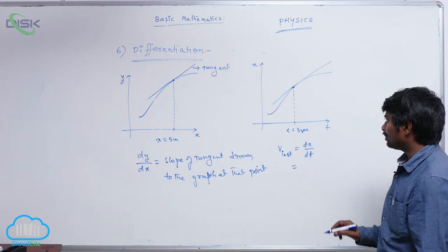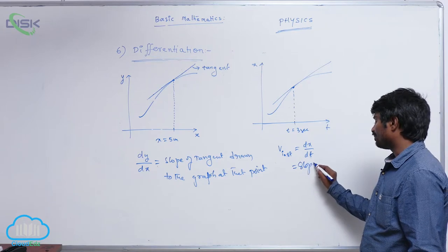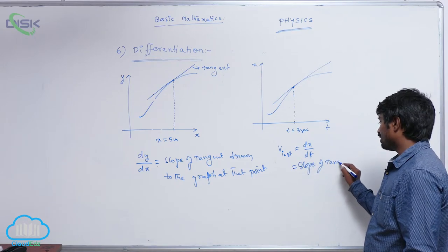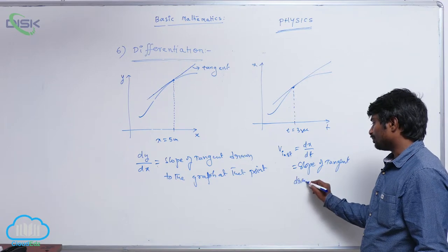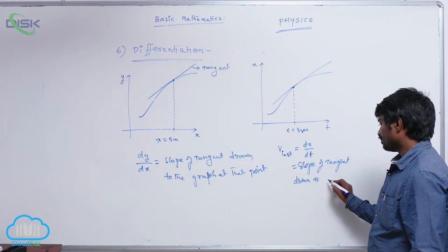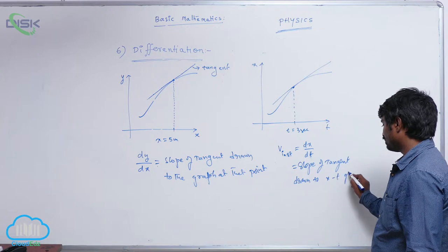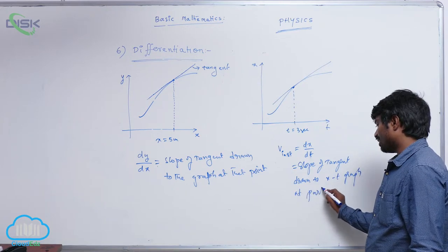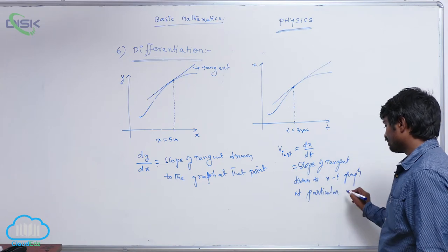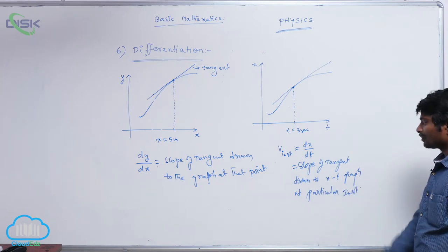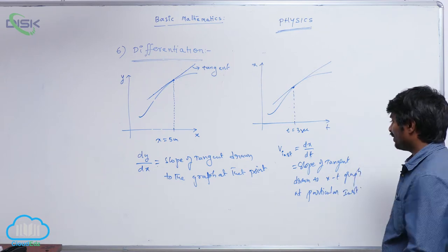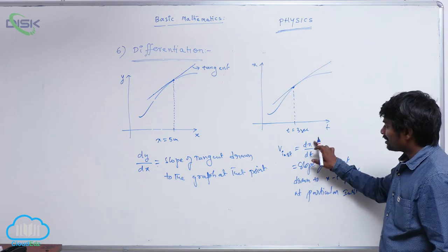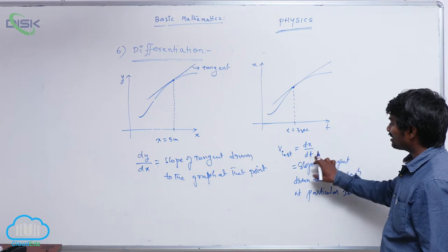So it is equal to slope of tangent drawn to x-t graph at particular instant. That particular instant is very important. So we can calculate instantaneous velocity. So to calculate instantaneous velocity we need x-t graph.